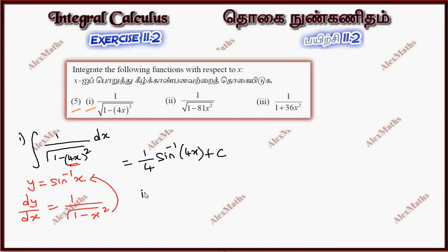Subdivision 2. Integration of dx by root of 1 minus 81x square, which is 9x whole square. The answer is 1 by 9 sin inverse 9x plus c.